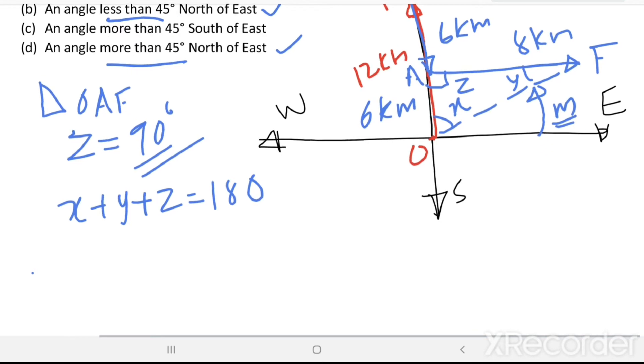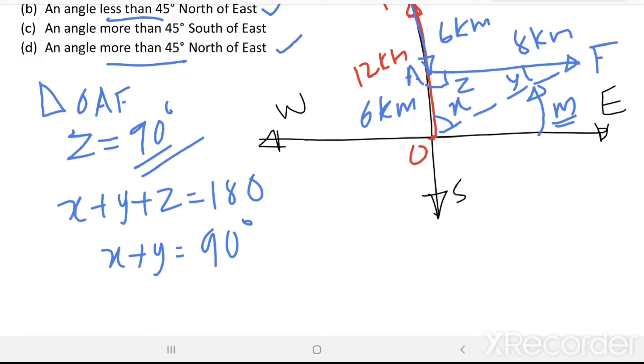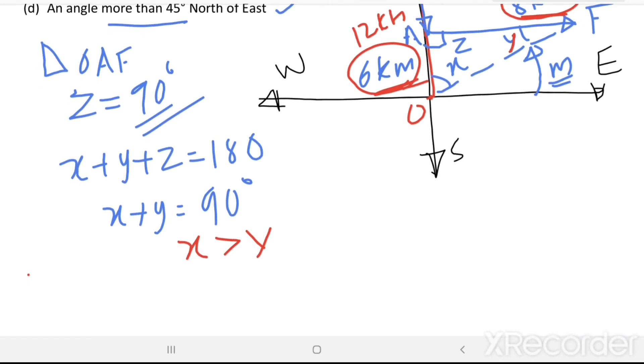Here, Z equal to 90 degree. Then, X plus Y equal to 180 minus 90 equal to 90 degree. Here, the largest side is 8 km. Angle opposite to larger side is greater than angle opposite to smaller side. Then X is greater than Y. X is greater than Y, and X plus Y equal to 90 degree. If X equal to Y, then X equal to Y equal to 45 degree, but here X is greater than Y, that means X is greater than 45 degree.